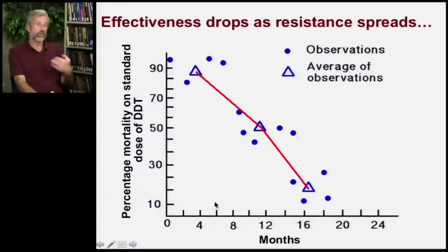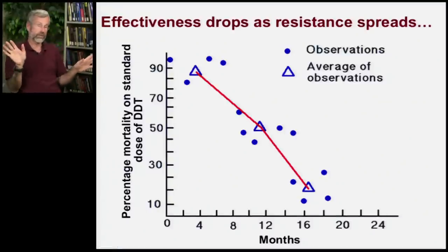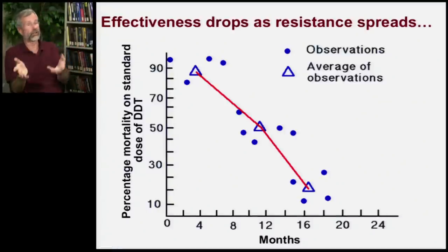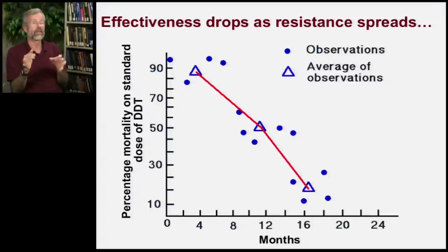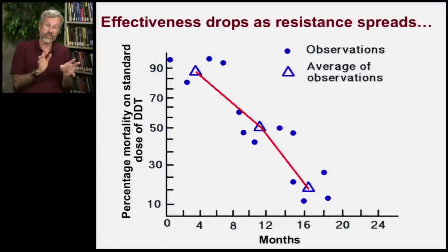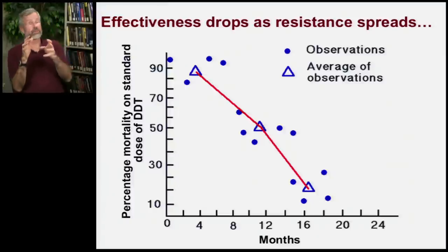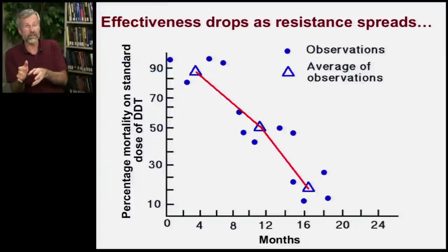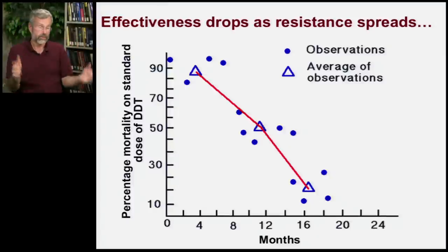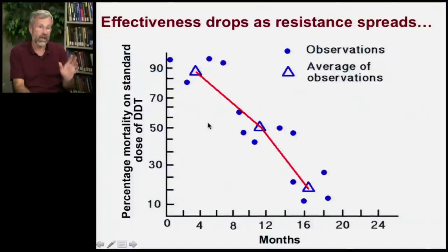Resistance spreads because you've gotten rid of all those individuals that were susceptible — they're no longer contributing to the gene pool. The only survivors are resistant, and the resistance allele becomes more common in the population. As the population becomes more resistant, your pesticide stops working.